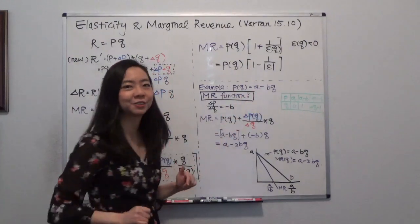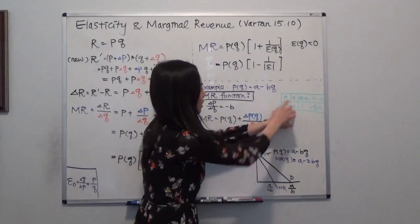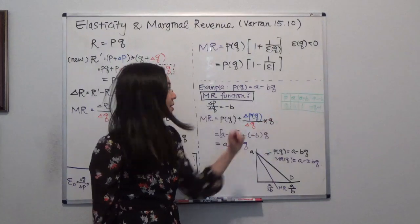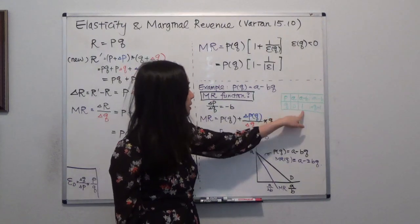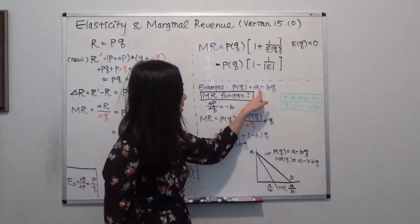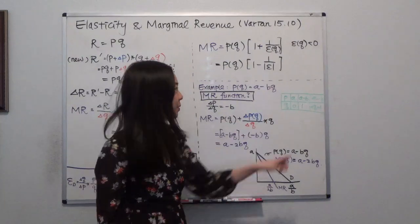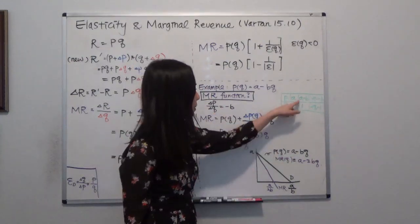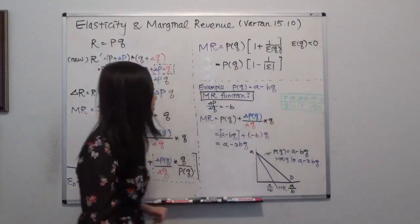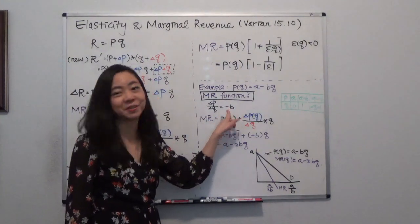So here is our price function. So we can see that when your quantity is equal to 0, according to this function, your price is a. Now, when the quantity is equal to 1, your price is equal to a minus b, right here. So a minus b times 1, that's a minus b. So you know when the quantity goes up by 1, your price goes down by b. So you can see delta P divided by delta Q is exactly negative b. That's how we got this.